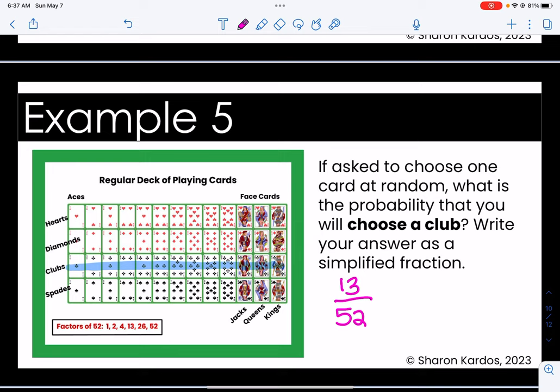And I have to be careful because a lot of students will leave this this way but that is not my final answer because I can see that 13 is a factor of 52. And so I can divide them both by 13 and my final answer is one fourth. And that kind of makes sense because one of my four rows is a row of clubs. So I have a one in four chance of choosing a club.